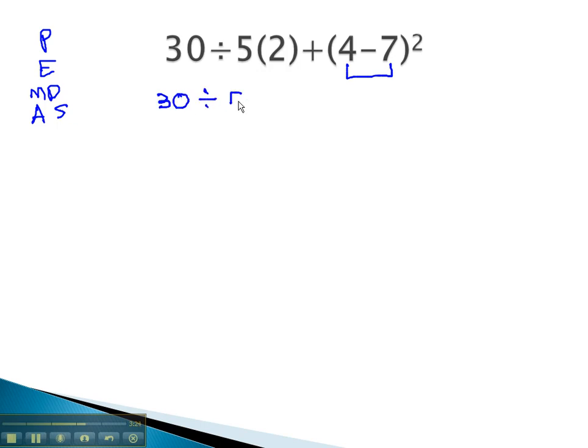30 divided by 5, times 2, plus 4 minus 7 is negative 3, squared. Next order of operations gives us exponents. We do the exponent next.